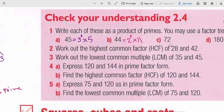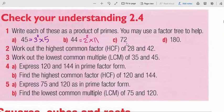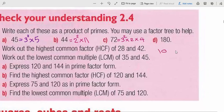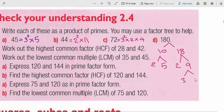For 72: start with 9 times 8. 9 is 3 times 3, and 8 is 2 times 4, so it is 3² times 2 times 2 times 4. For 180: say it's 18 times 10. 10 becomes 2 and 5; 18 becomes 2 and 9; then 9 becomes 3 times 3. So 180 as the product of prime numbers is 2² times 3² times 5.